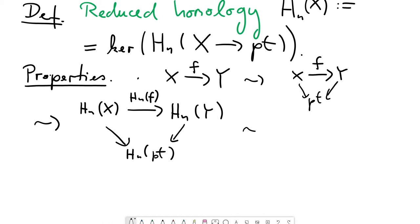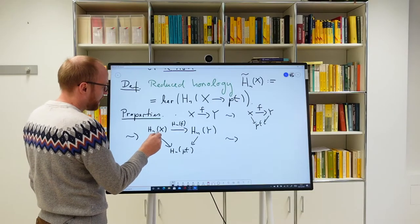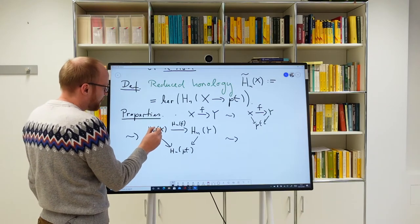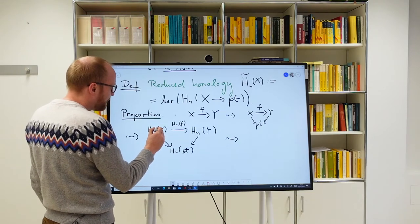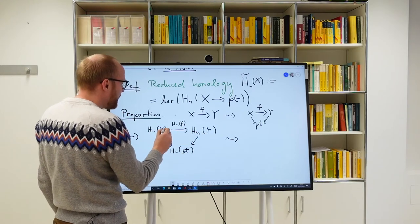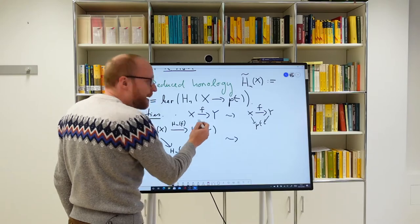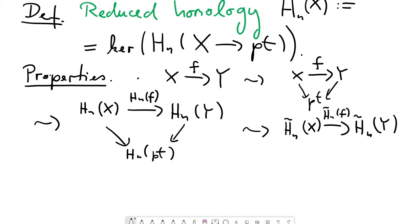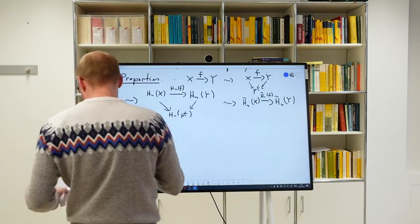If we have an element in the kernel of the map from H_n(X) to the point — which is precisely what an element in reduced homology is — then by commutativity it maps to zero along the composition, meaning the element maps to an element in the kernel of the corresponding map. In other words, it maps to an element of the reduced homology of Y. Therefore, we obtain an induced homomorphism in reduced homology, H̃_n(f): H̃_n(X) → H̃_n(Y).